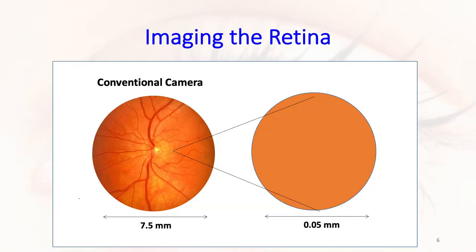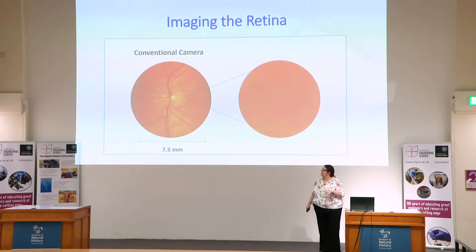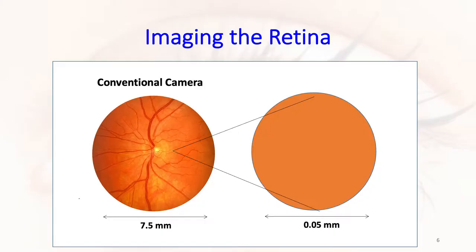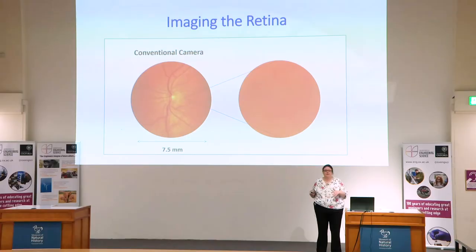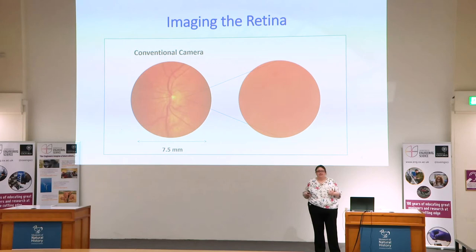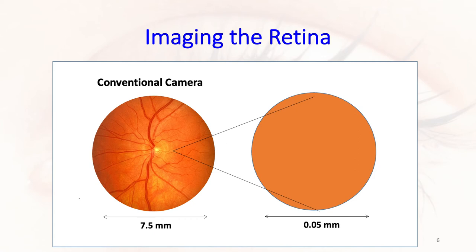We can diagnose disease using single-cell resolution, which is very difficult to do with techniques such as MRI. So how do we do this? You've probably all been to an optometrist — you sit in front of an instrument, you see a flash, and you get this image on the screen. This is the typical image you get with conventional clinical technology. That area of retina is about seven and a half millimetres. If we were to magnify that region to look at single cells, we would just see a blurred-out patch — we really couldn't do single-cell resolution in the living eye, and that's what we need to detect these diseases earlier.